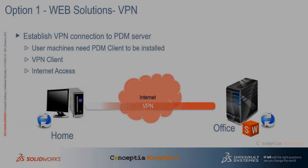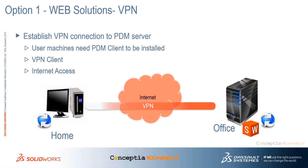We have two options through which we can connect to our PDM servers to access CAD data. Option 1: if it's feasible, a Virtual Private Network can be set up between the server machine and client machine, which requires a separate set of VPN server and client installations, and again needs a good internet connection at the user end.